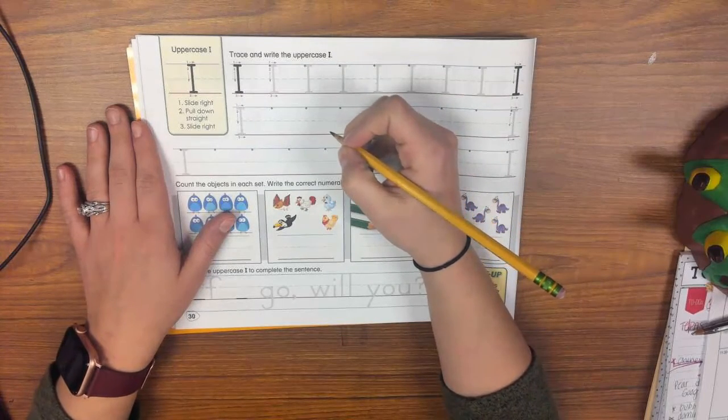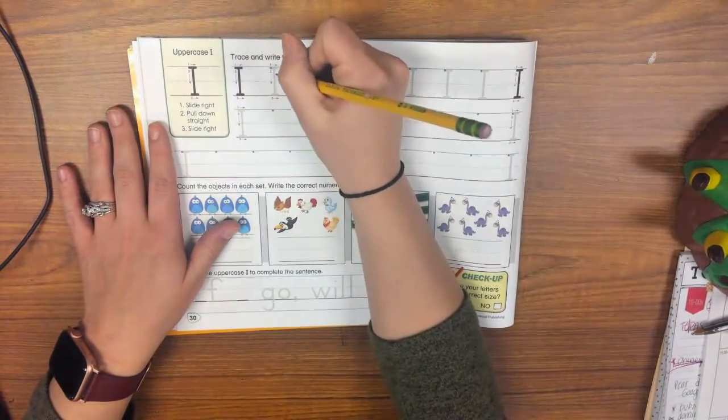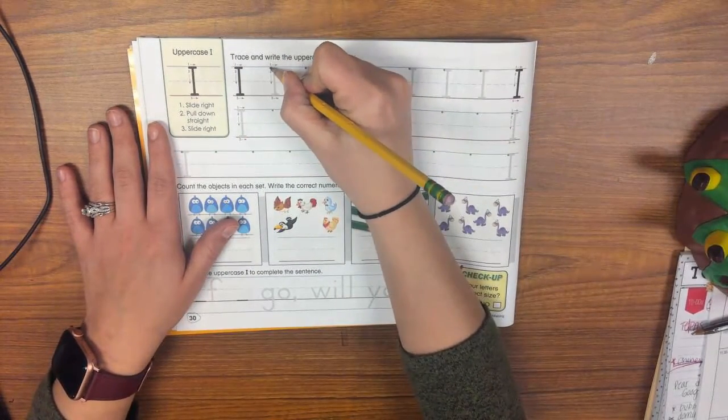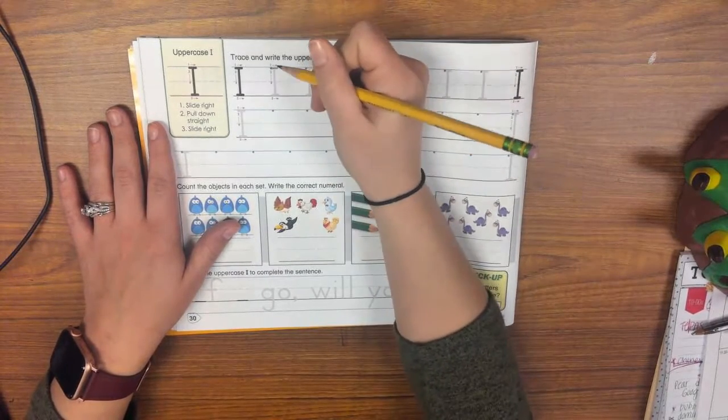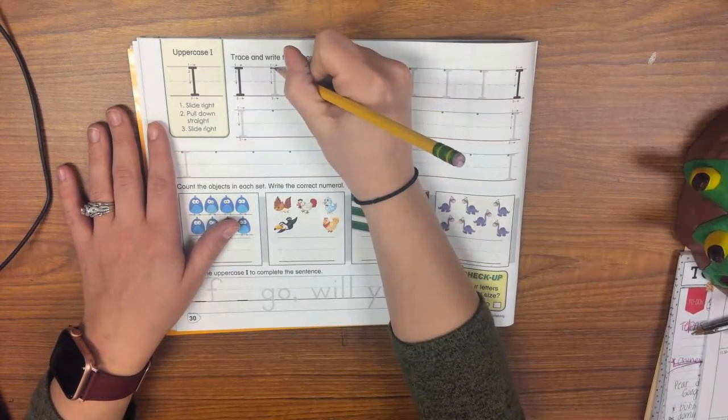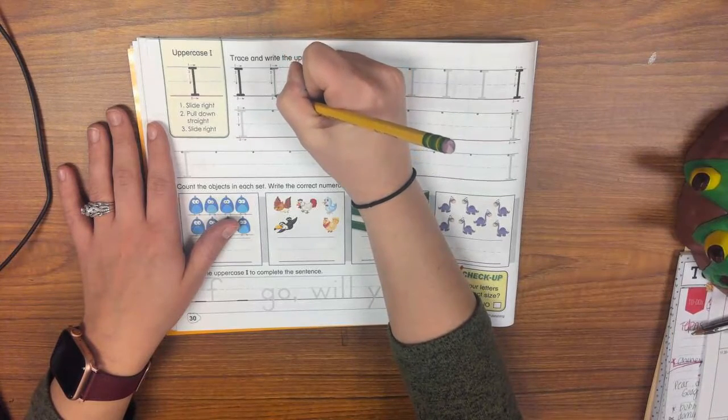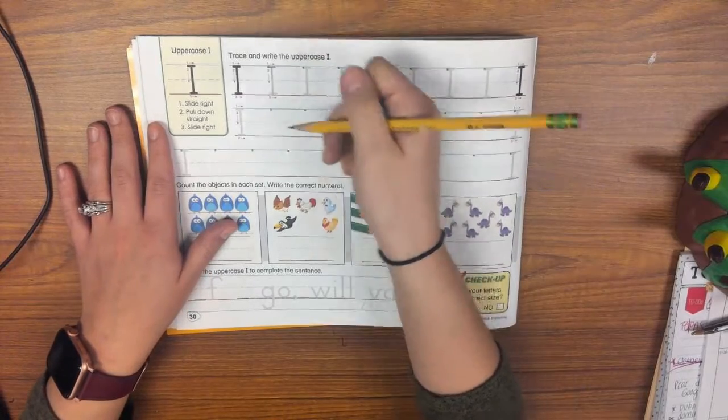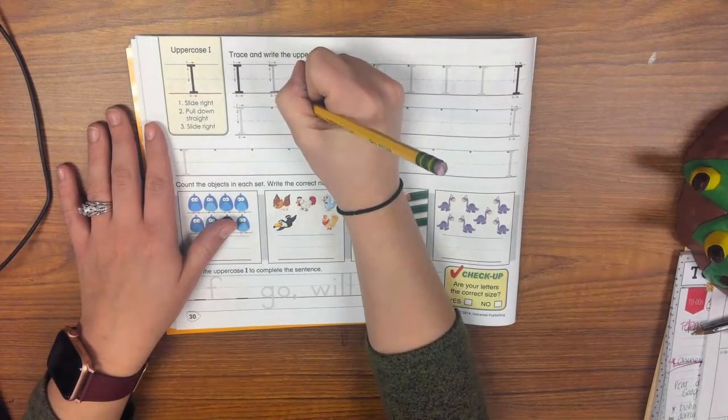Alright, the uppercase I has three strokes. The first stroke is to start on that top line, that skyline right here, and we're going to slide right. We're making kind of like the hat. Then you're going to go to the middle of that line you just made and pull down straight. So it kind of looks like a T with a very small top. And then the last thing you're going to do is put the bottom on. You're going to slide right again.